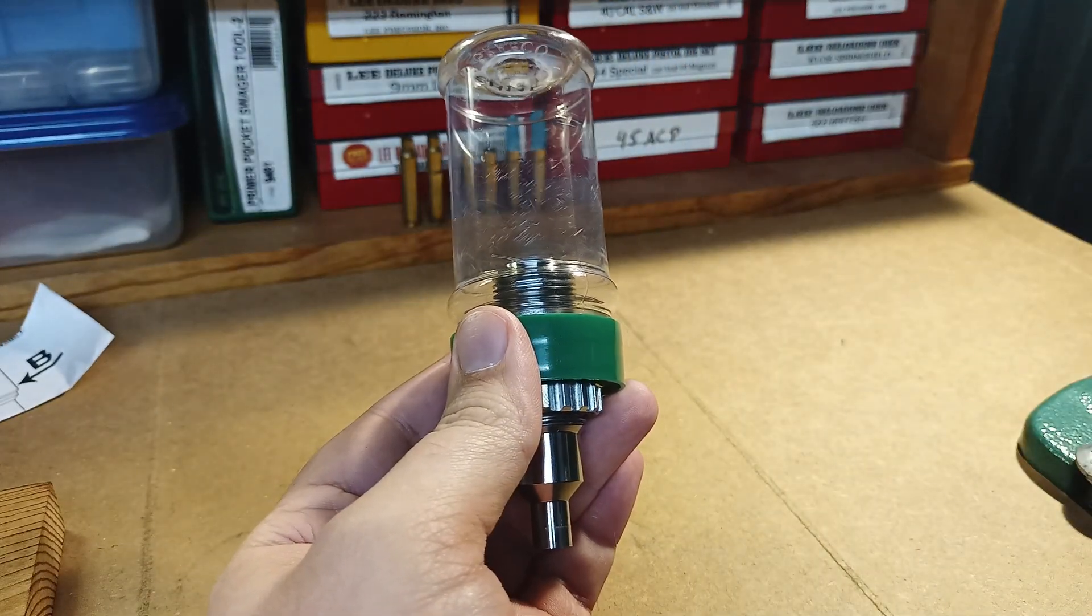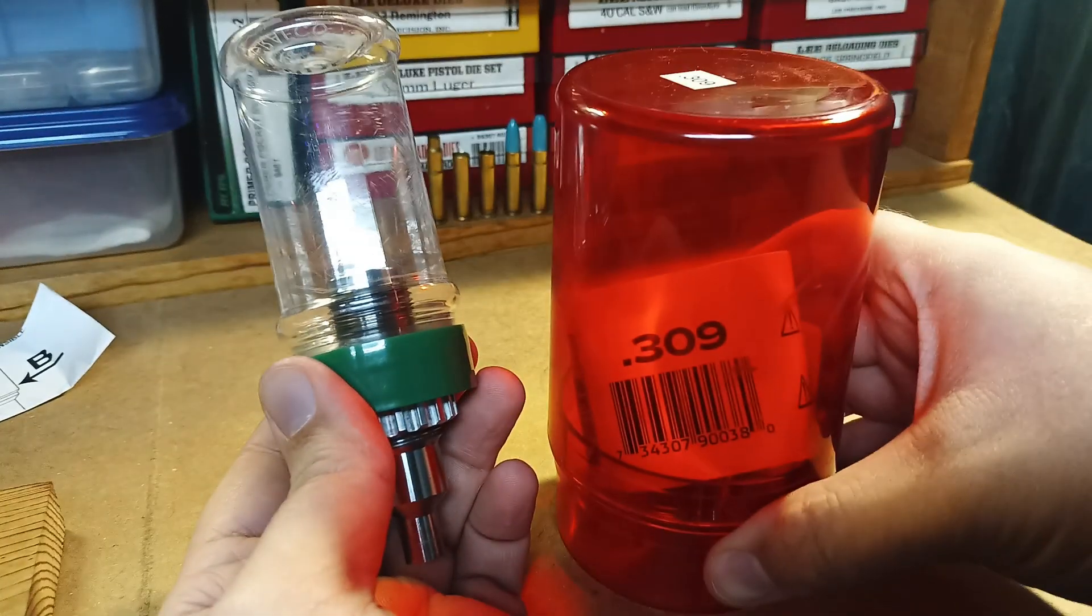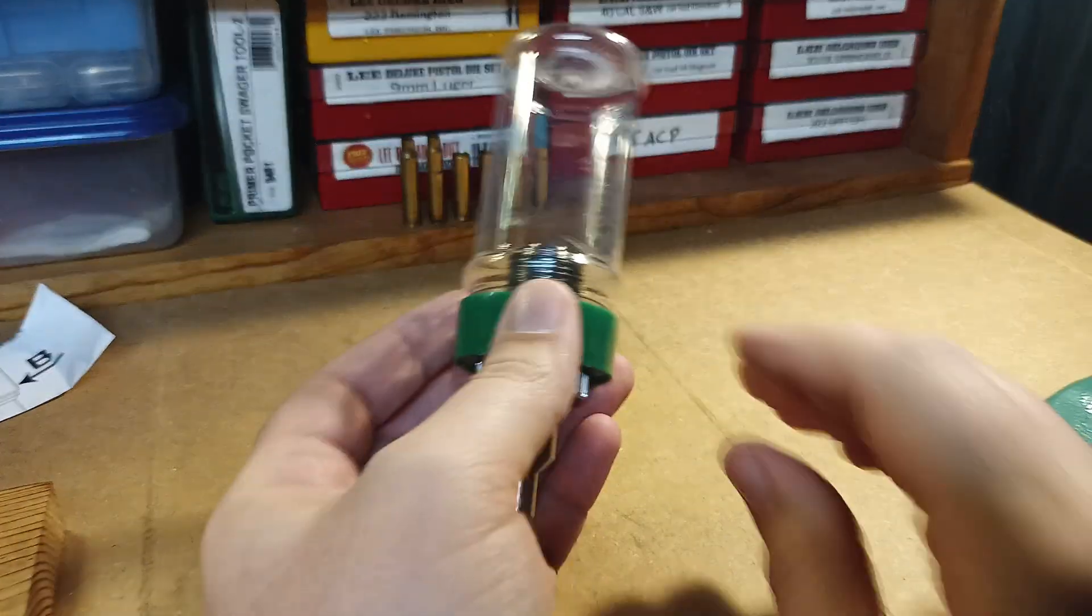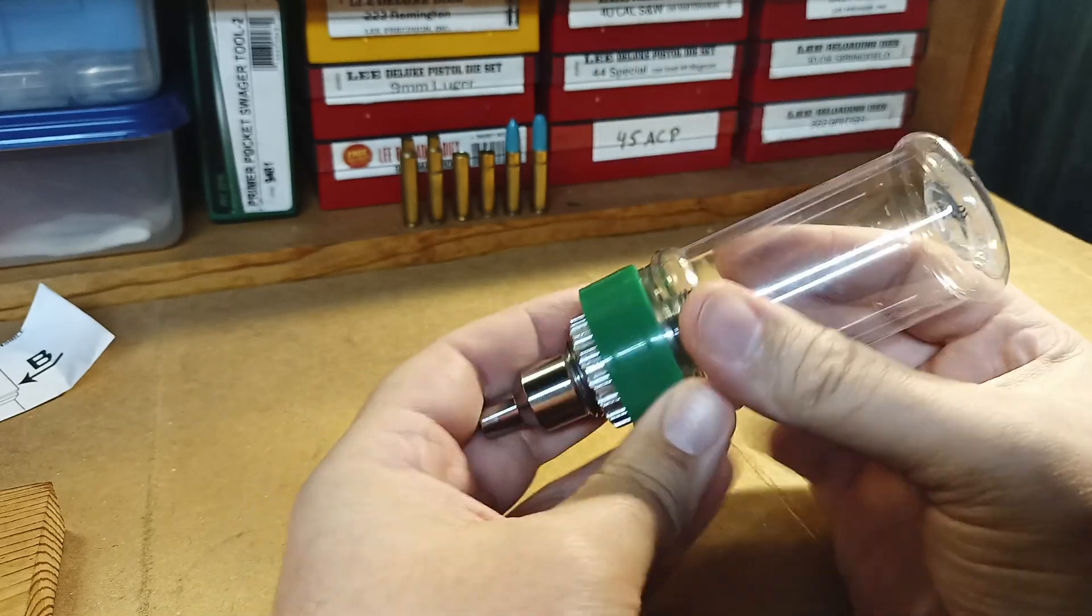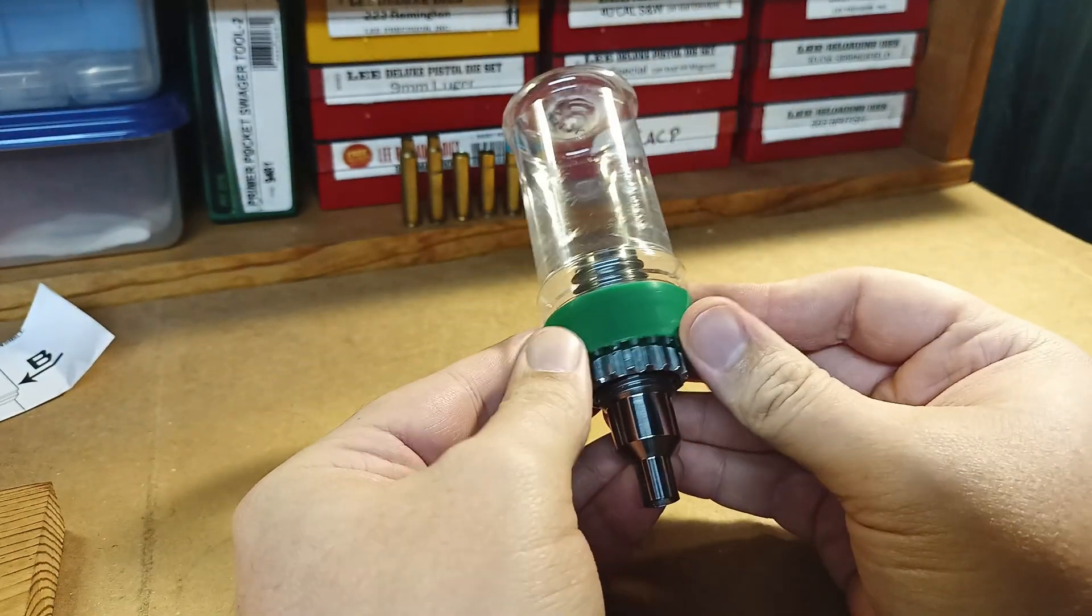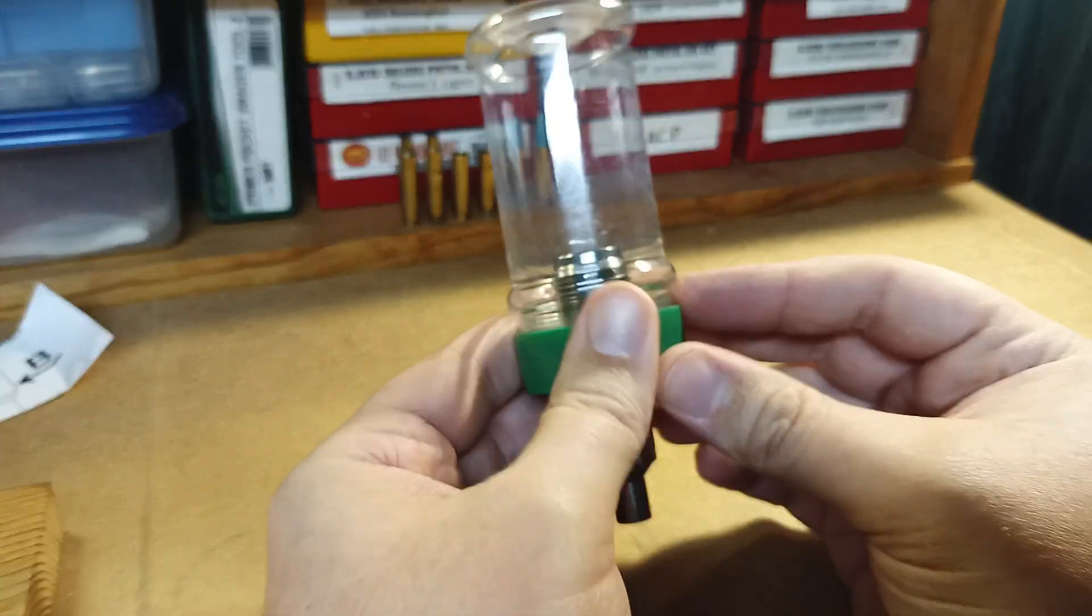So this is like the same idea as these red catch cups from Lee for when you do the sizing of your bullets or any of that other stuff. But this is how I think it should have been shipped originally. It's a more complete product. So let's go put this on the press and show how it works.